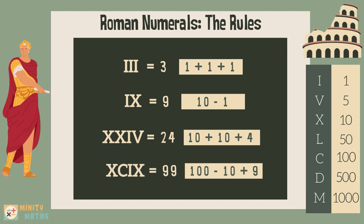Finally, the number 99 is written by starting with the largest value, C, which is equal to 100. There is an X before the C, so we subtract 10 from 100 to get 90. After this, the next highest value is the X at the end, equal to 10. We subtract the I before it, leaving us with 9. So we have 90 plus 9.